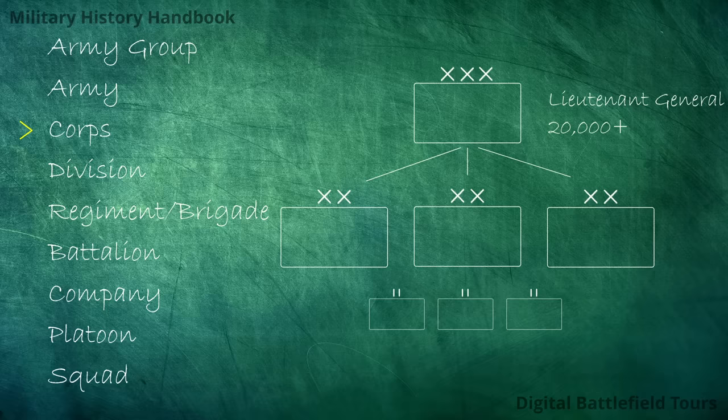For example, a corps with an offensive mission to breach an enemy defensive line might assign a rocket artillery battalion to the division making the initial assault, complementing its standard organization with specialized firepower. Another example would be a corps with a defensive mission assigning a heavy tank destroyer battalion to a division under tank threat, because they are defending an area suited to enemy tank attack.